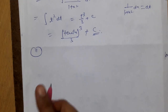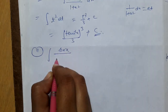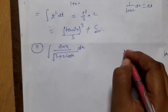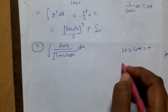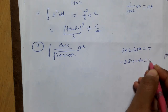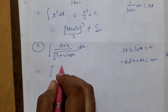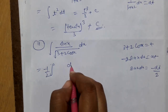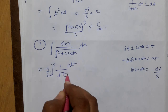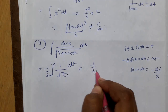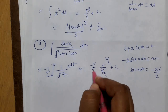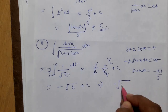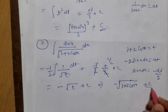Part 2: integration of sin x / √(3 + 2cos x) dx. Put 3 + 2cos x = t, so −2 sin x dx = dt, meaning sin x dx = −dt/2. The integral becomes −(1/2)∫1/√t dt = −(1/2) · t^(1/2)/(1/2) + c = −√t + c. The answer is −√(3 + 2cos x) + c.